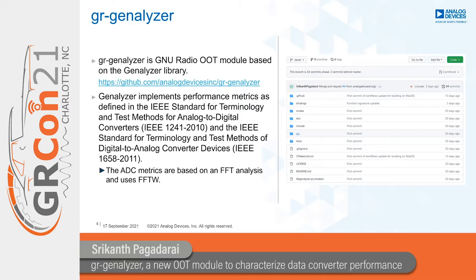Users can also utilize time series data or the FFT of that time series data captured from a data converter to directly compute desired performance metrics. In some use cases, FFT is computed by other means, and the user only needs analysis of the FFT. Generalizer employs FFTW under the hood to compute the FFT. The terminology and definitions for common performance metrics are adopted from the IEEE standard for terminology and test methods for ADCs and DACs.